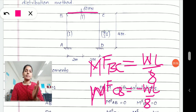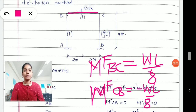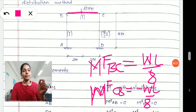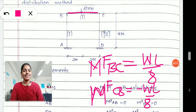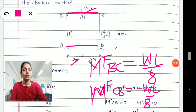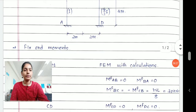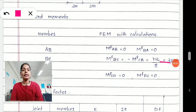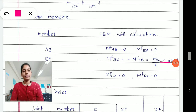The fixed end moments for span BC and CB are given with standard formulas and sign convention. Putting in the values: W is 60, length is 2 plus 2 equals 4 meters, divided by 8. So 60 into 4 divided by 8 gives a fixed end moment of 30 kilonewton-meter, plus for span BC and minus for span CB. For the next span CD there is no external loading, so the fixed end moment becomes zero.